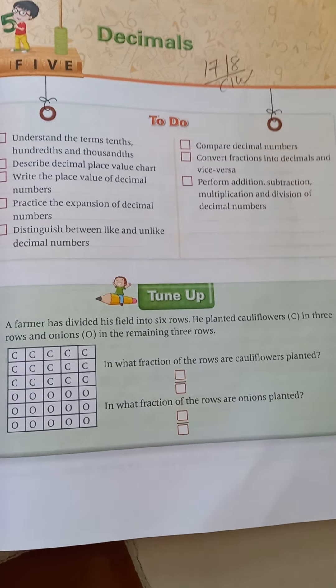C is for cauliflower and O is for onion. Counting the boxes: 5 rows of 6 gives us 30 total boxes. So the denominator is 30.